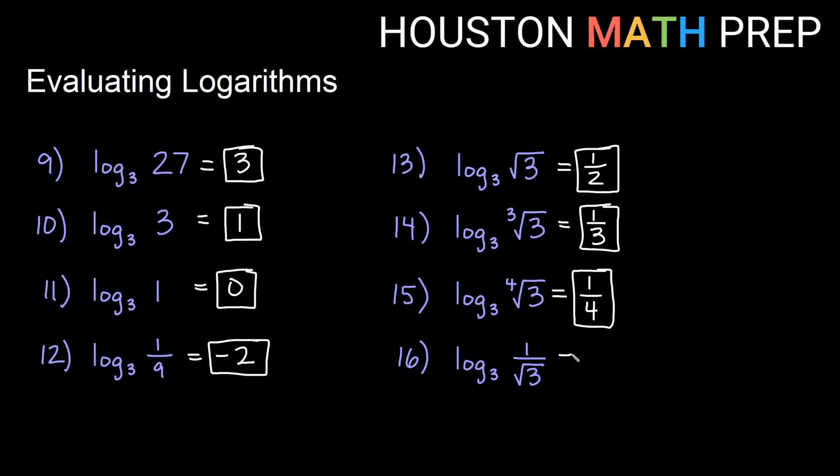Now here we have a mixture. Not only do I have a square root which I know is the one half power of 3, but I also have the reciprocal of that square root, so I'm also going to need a negative in this case. So it's a reciprocal and it's a root, so we get a negative and we get a rational exponent. Hopefully this helps everybody starting off with evaluating logarithms. Thanks for watching everybody, we'll see you in the next video.